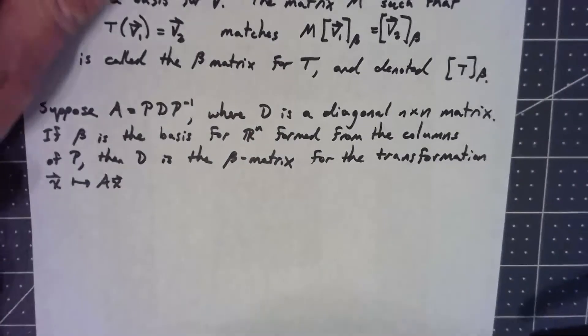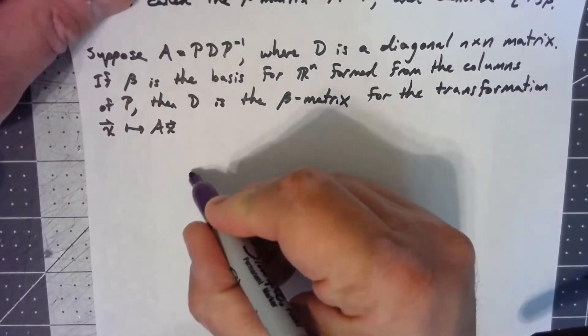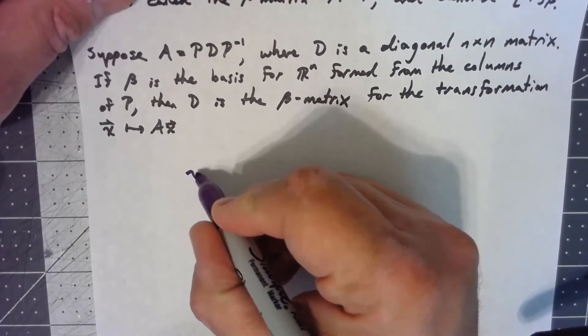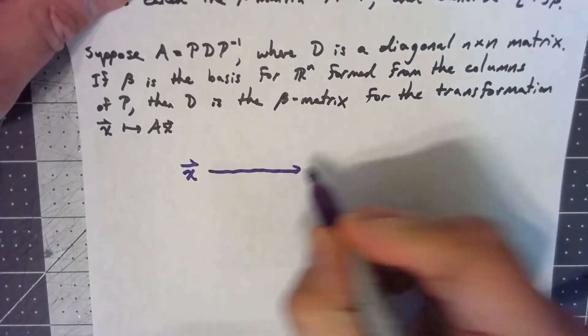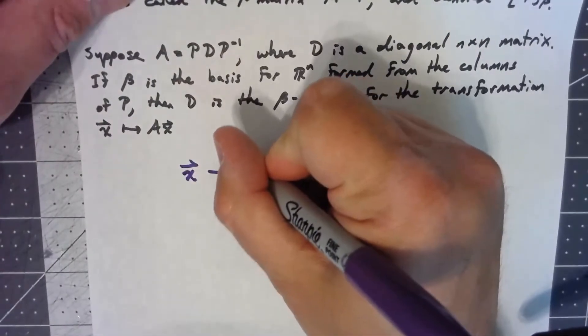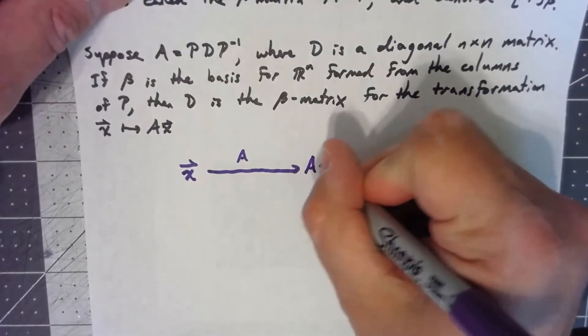Let's think about this. So we've got a vector x, and if we multiply on the left by A, we get Ax. Easy.